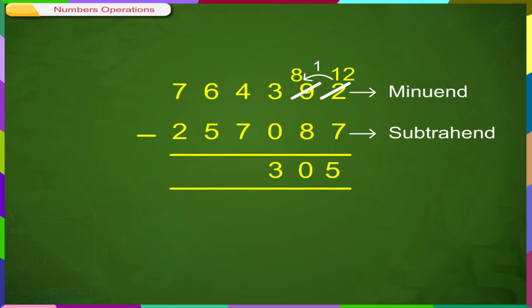Subtracting in the 1000's column, 4 minus 7. 4 being a smaller number, we will borrow 1 from 10,000 column and make it 14. 14 minus 7 is equal to 7.